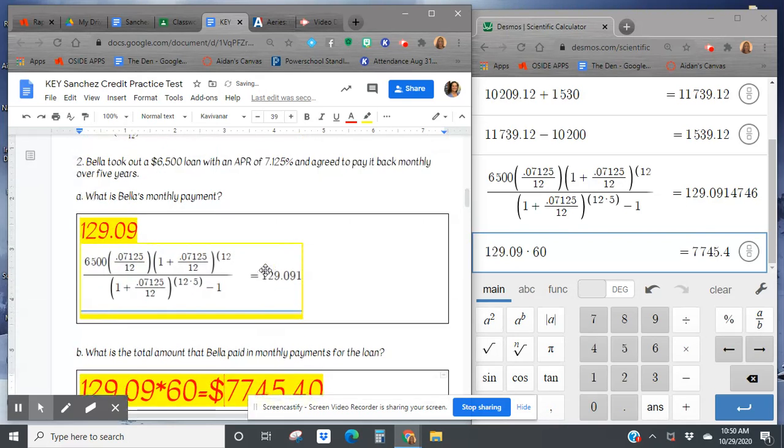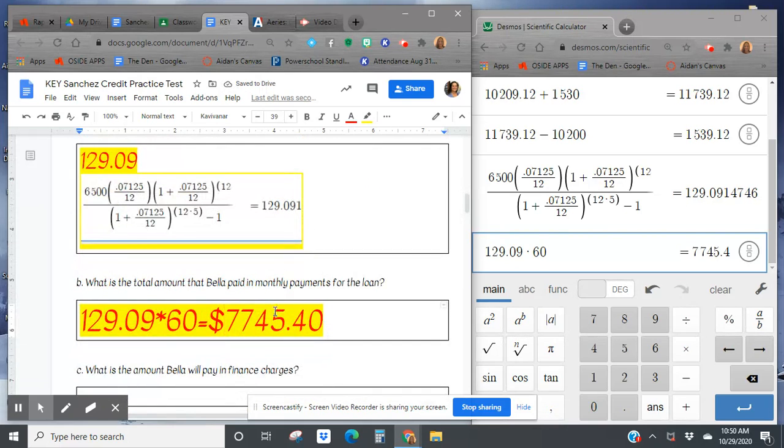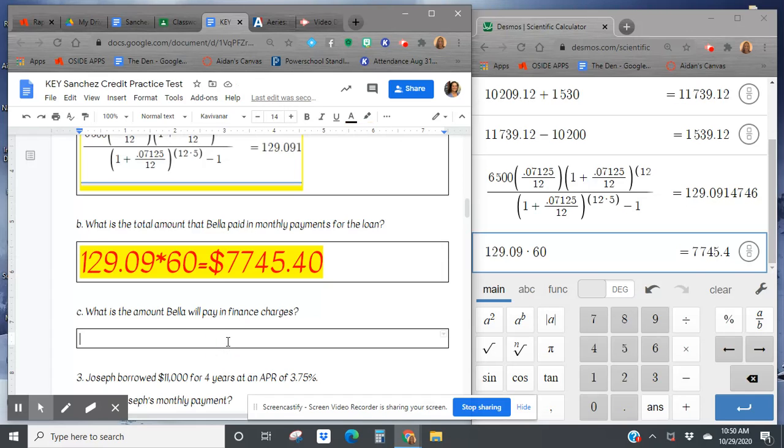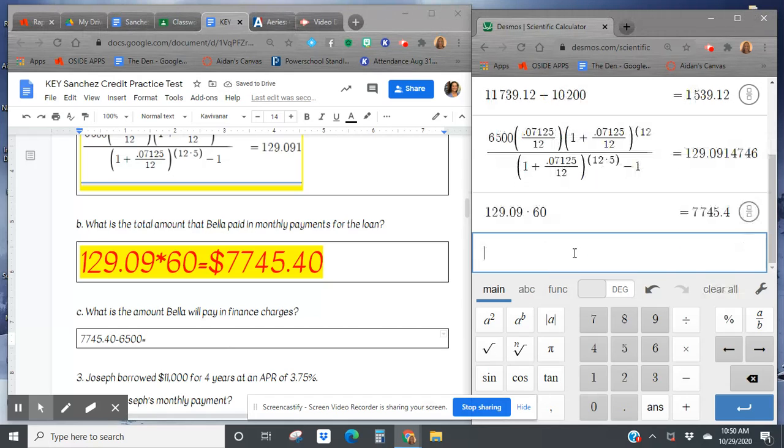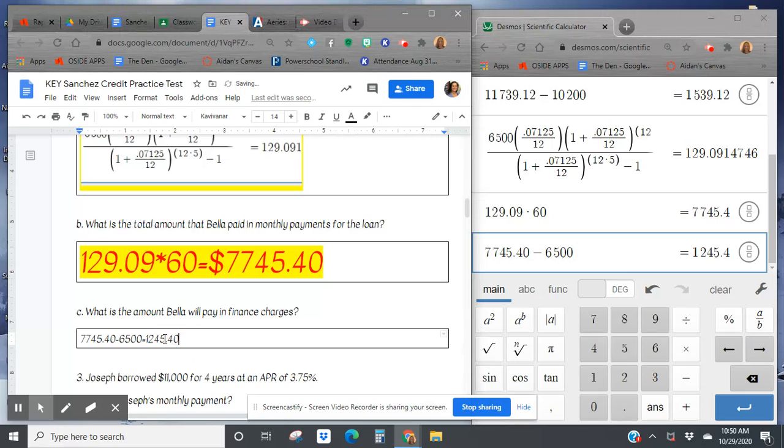Now think about that. It was a loan for $6,500 and she paid this much. So what did she pay in finance charge? $7,745.40 minus the $6,500 amount of the original loan. And this will give us the finance charge. Finance charge is $1,245.40.